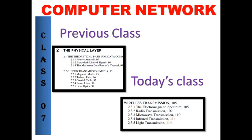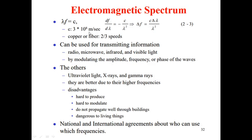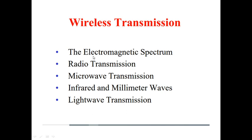How can transmission take place without wire? That is only through the air. Today we are going to study that. First, we are going to learn about the electromagnetic spectrum, then radio transmission, microwave signals transmission, and how infrared, millimeter waves, and light wave transmissions work. So all these five things we are going to study today.